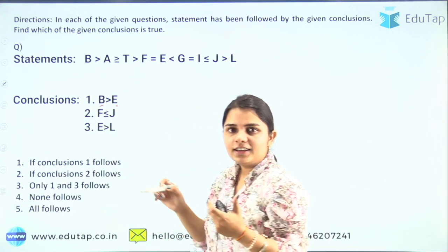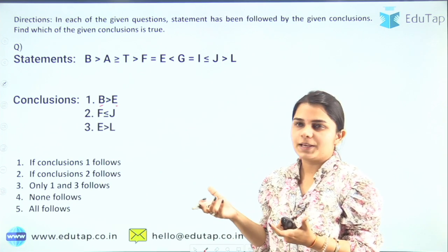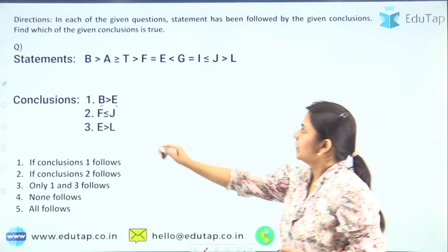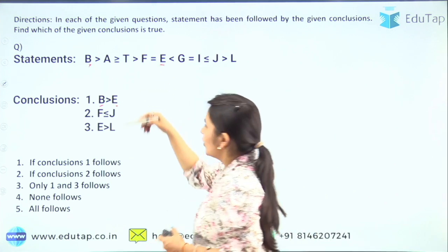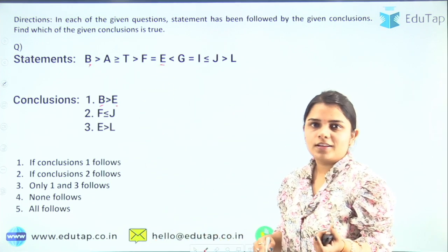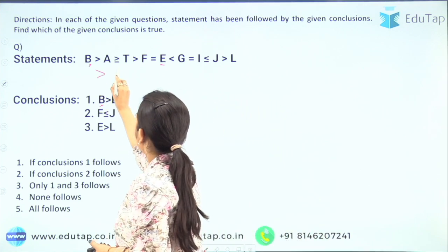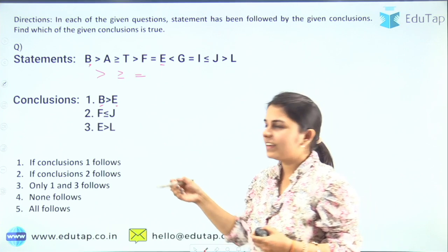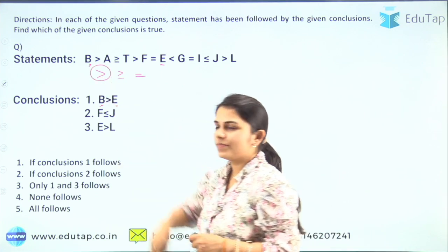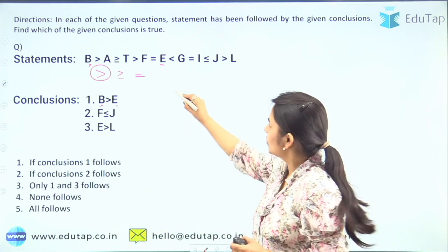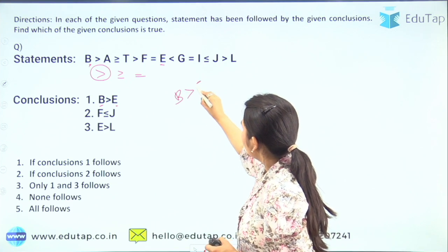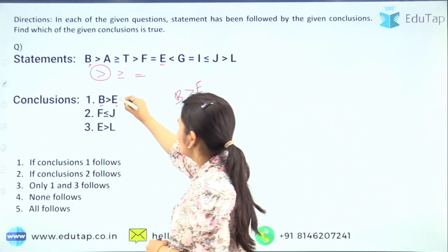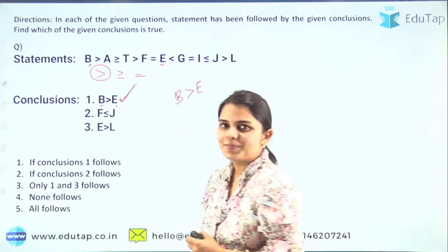B और E का देखना है — way check होगा B से। B यह रहा, E यह रहा — way clear है? बिल्कुल। Sign select करो — तीन signs हैं, किसकी higher ranking थी? इस वाले की। तो क्या होगा: B is greater than E। और आपको conclusion में यही given है — so this conclusion is correct।